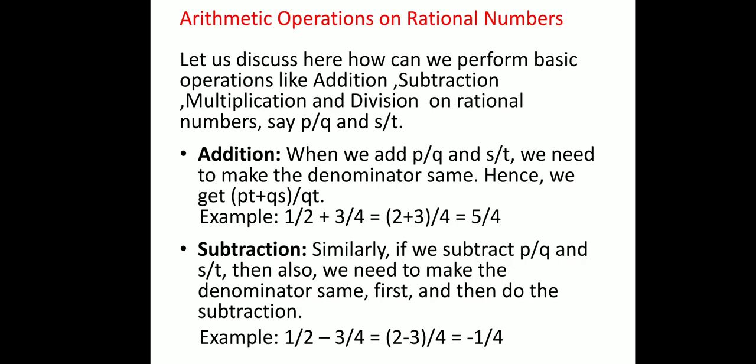Now let us discuss the basic operations to be performed on rational numbers. We have already performed operations on integers, whole numbers, and natural numbers. The basic operations in mathematics are addition, subtraction, multiplication, and division. Let us perform the first operation: addition. If I need to add two rational numbers — taking general rational numbers P/Q and S/T — first I need to make their denominators the same, giving us (P×T + Q×S) / QT.